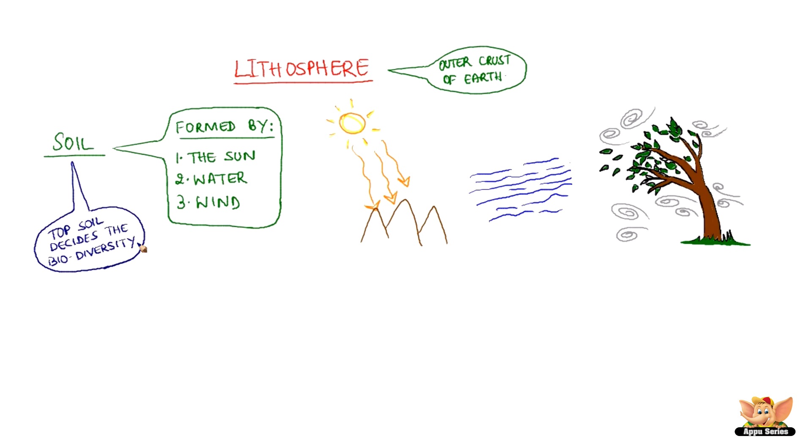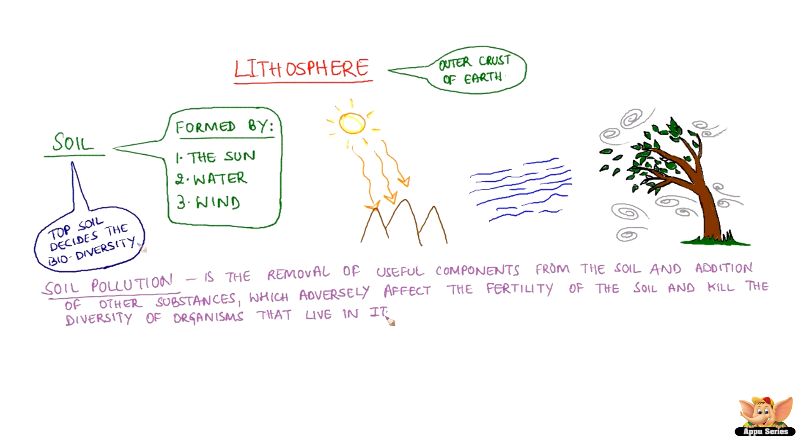Let's now see what is soil pollution. Soil pollution is the removal of useful components from the soil and addition of other substances which adversely affect the fertility of the soil and kill the diversity of organisms that live in it.